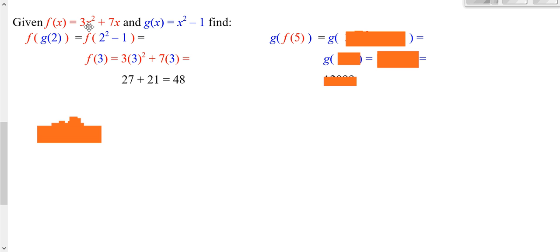F says 3 times input squared plus 7 times input. So, 3 times input squared plus 7 times input. In this case, our input is what's in our parentheses, the 5. So, I've got to put a 5 in for each spot.